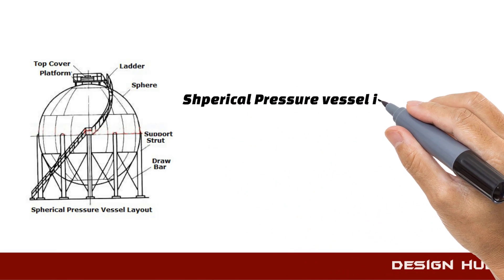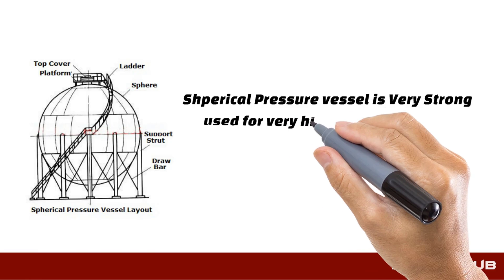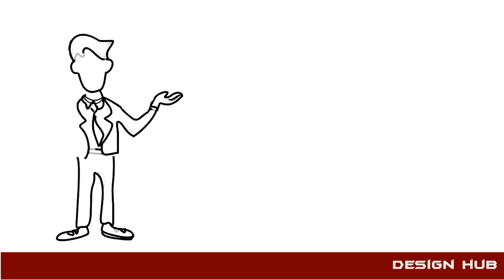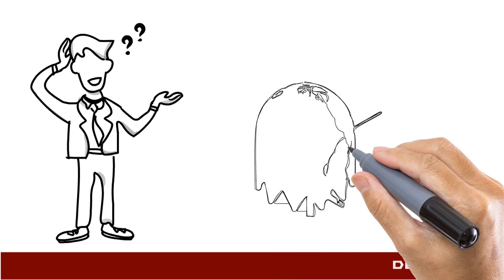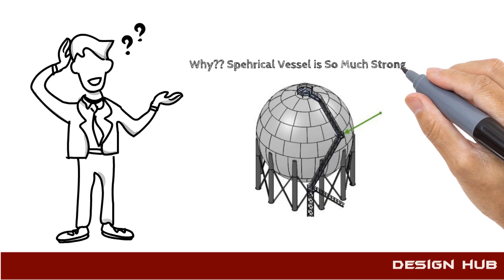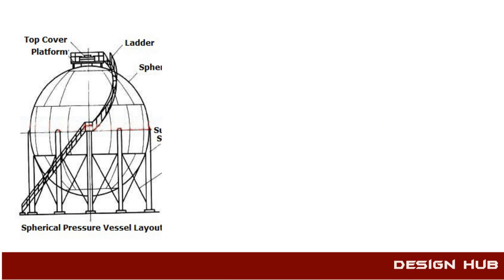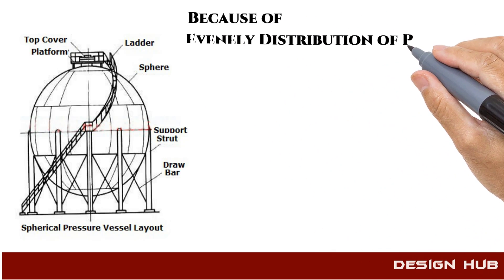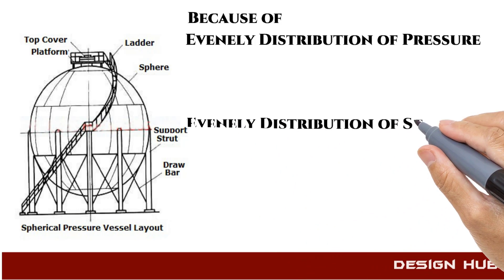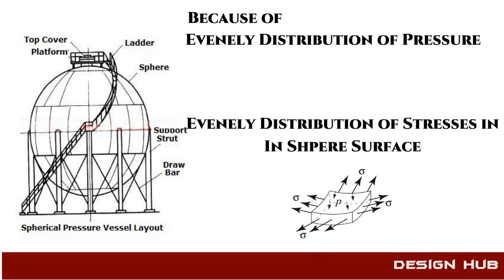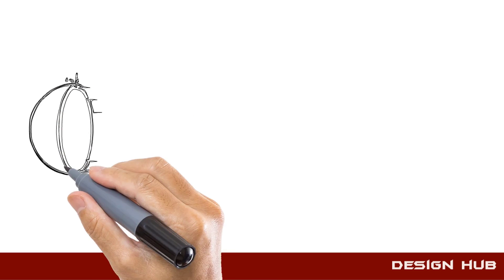The spherical pressure vessel is very strong. With the same thickness, it can handle more pressure than other shapes. Why is the spherical pressure vessel so strong? Because in a spherical shape, there is an even distribution of pressure across the spherical surface. You can see in this diagram the pressure distribution on the spherical surface.